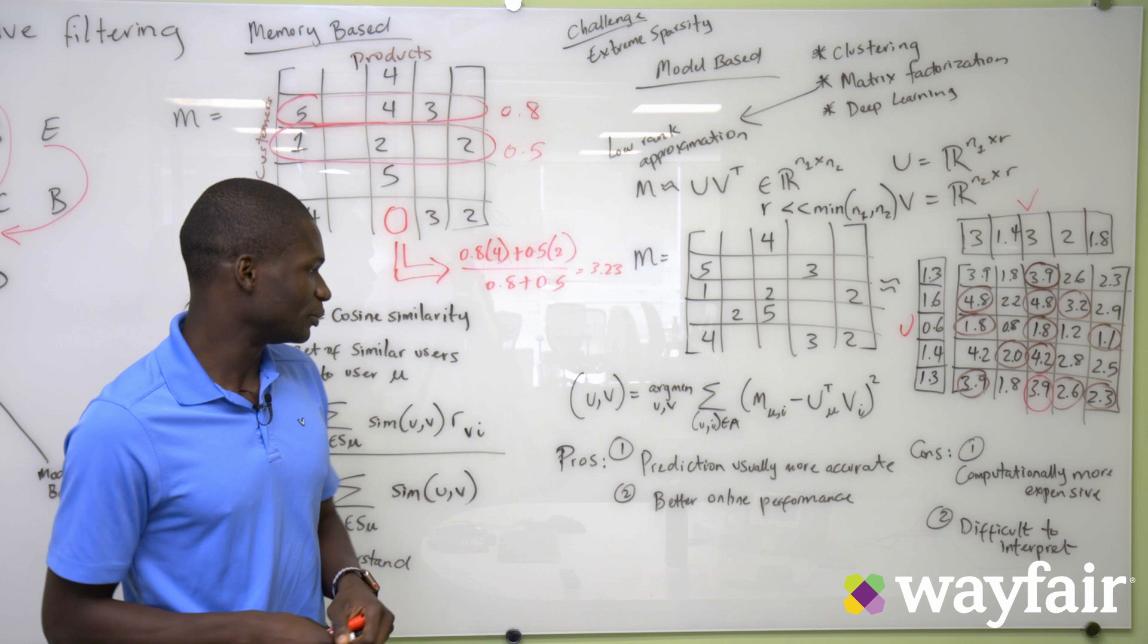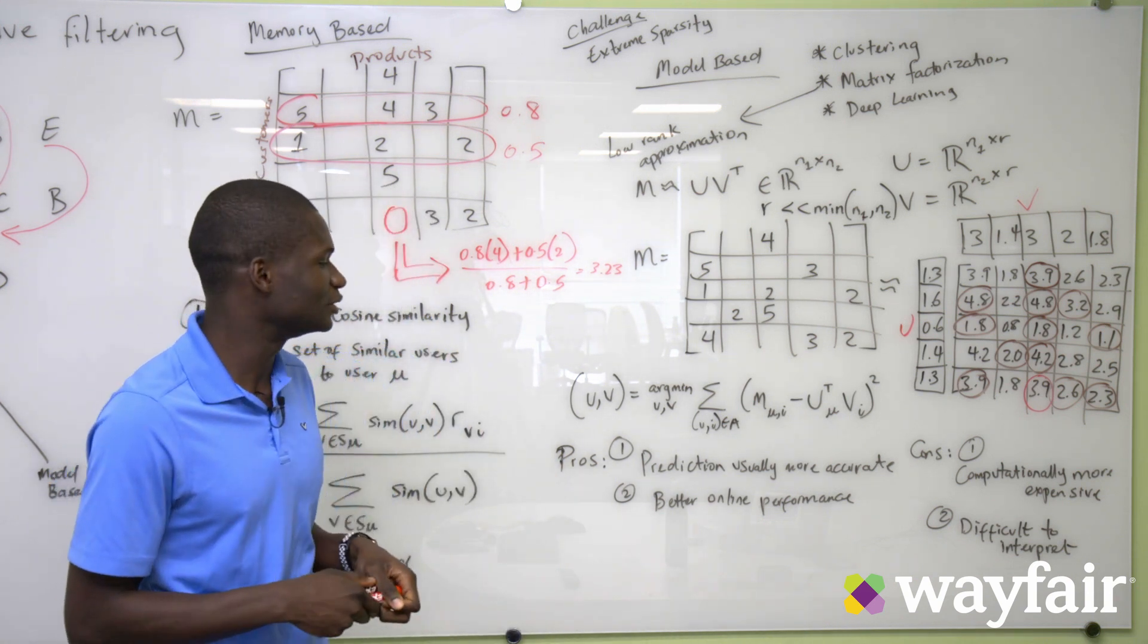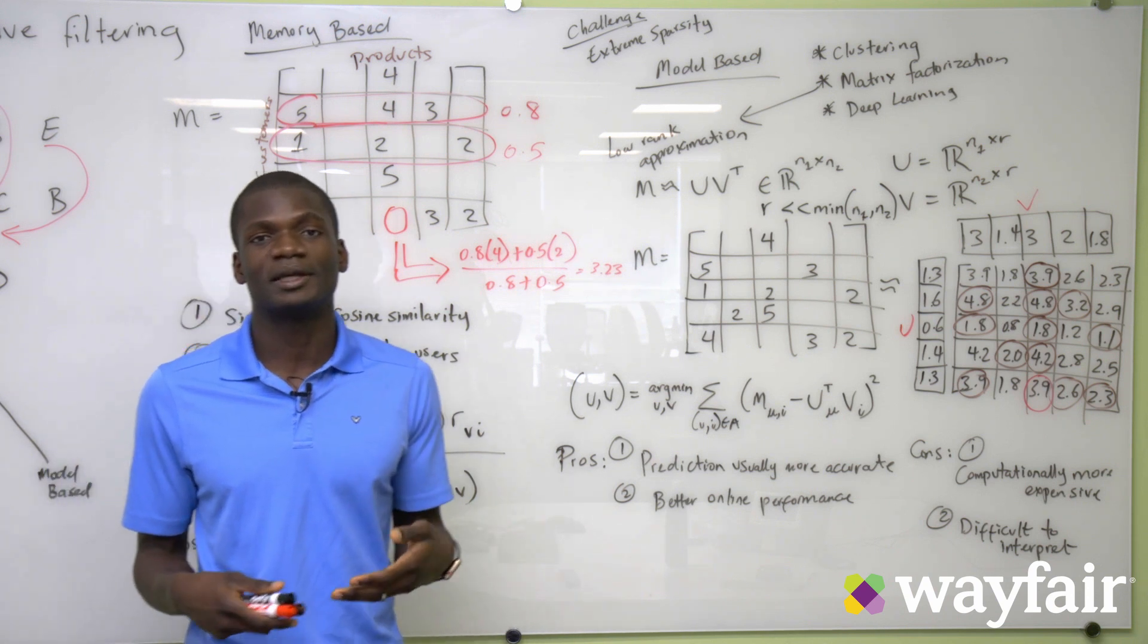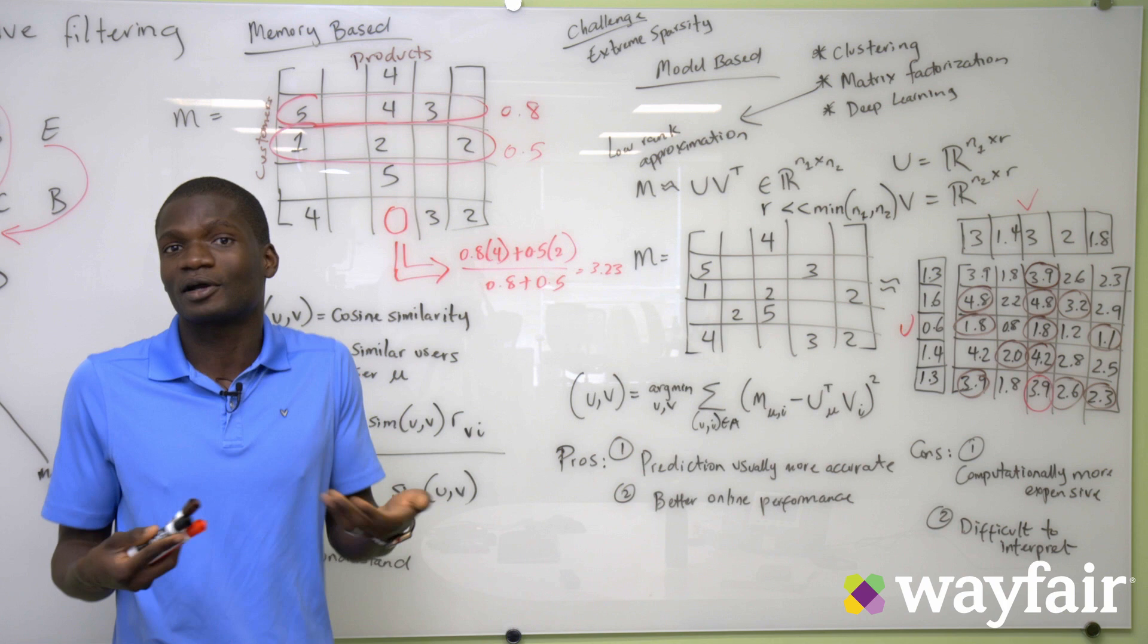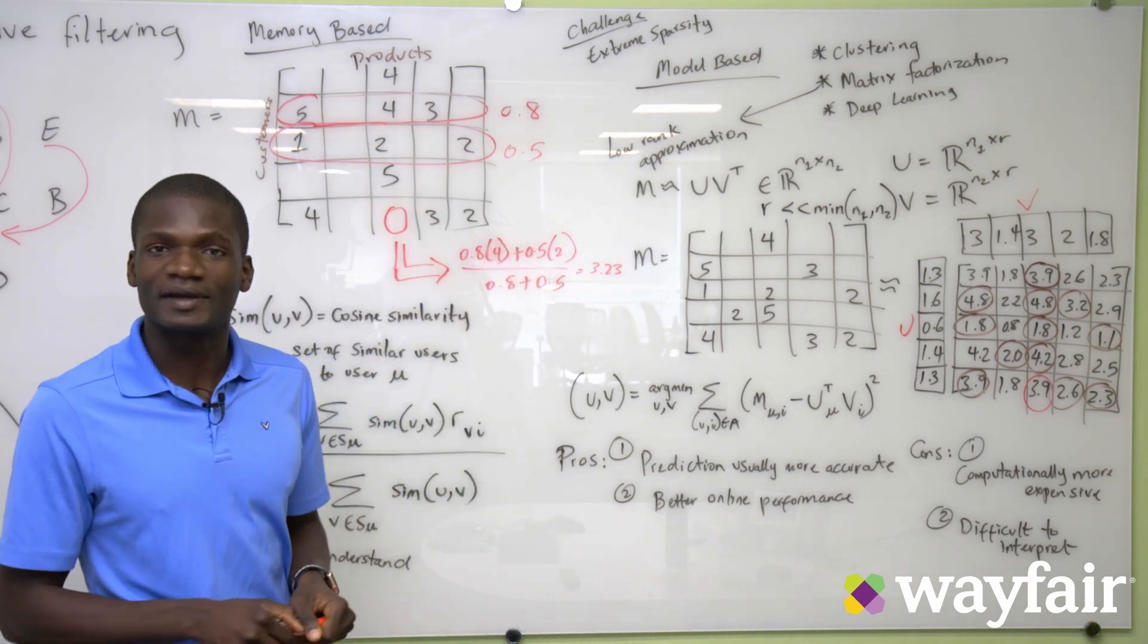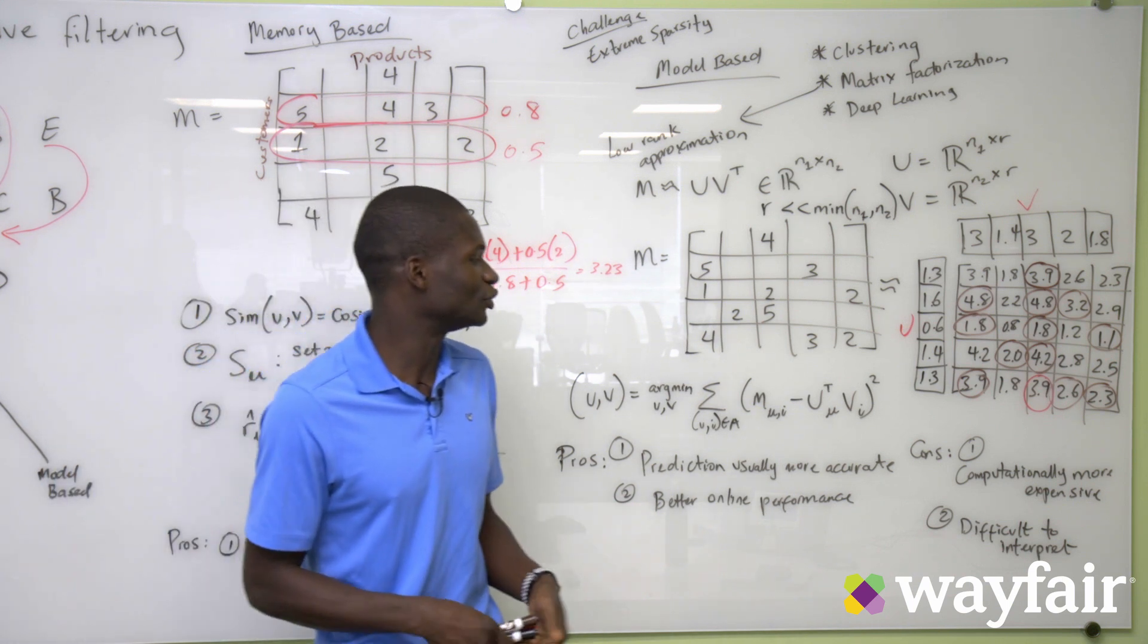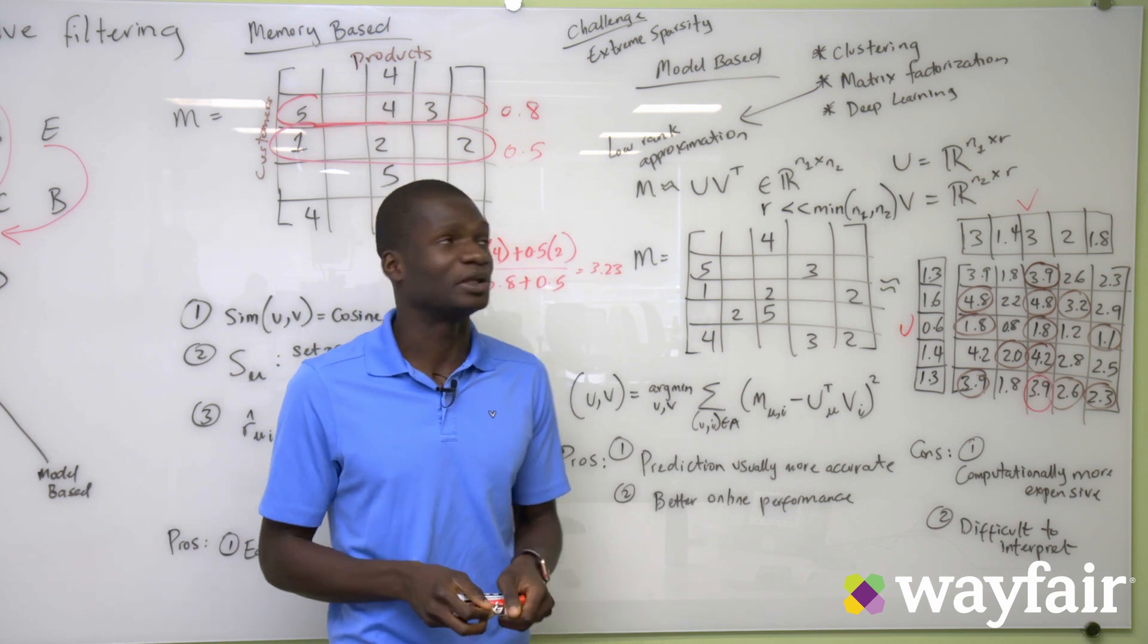The pros of this approach is that prediction tends to be more accurate. Online performance tends to be better. But the cons is that model-based tends to be more computationally expensive, especially if we're using some kind of a complex deep learning approach. And then the second disadvantage is that it tends to be difficult to interpret and difficult to actually explain why we're coming up with the predictions that we did.